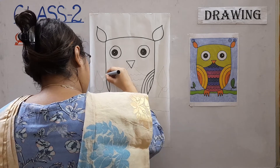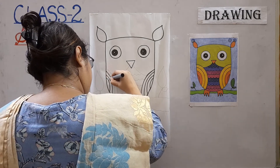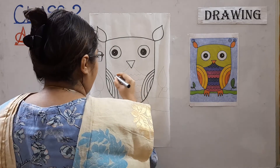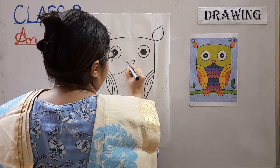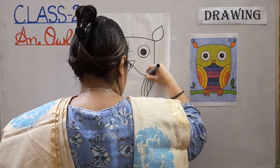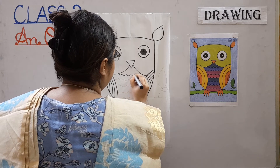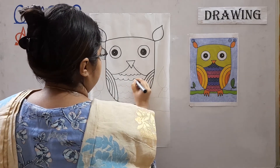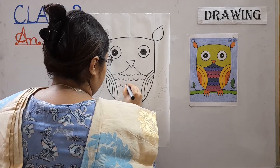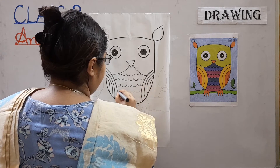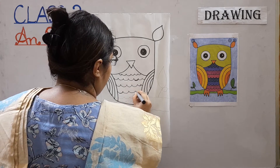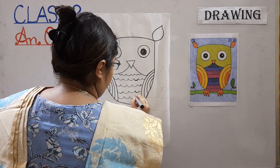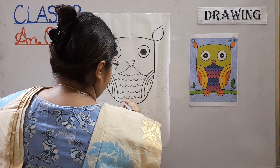Now from this side as well, coming down slowly. You have to just trace your drawing — what you have drawn, draw on that only. When you colour it children, it is going to look so beautiful — a rainbow colour owl. They are very rarely found, but they do exist.